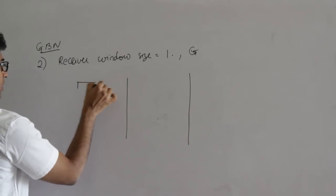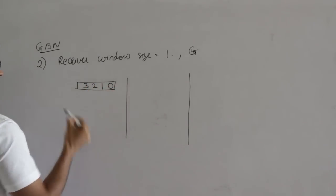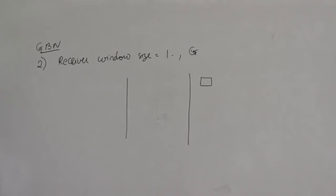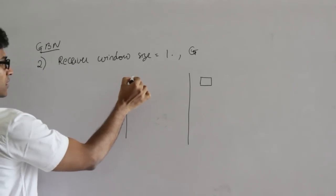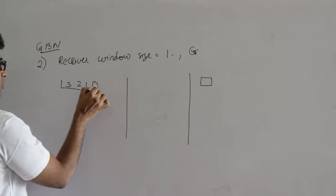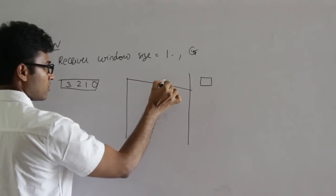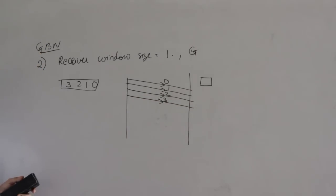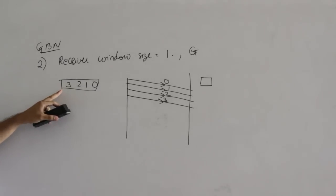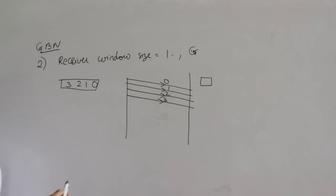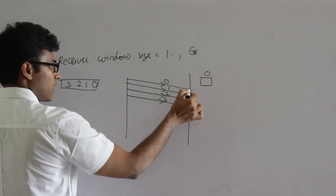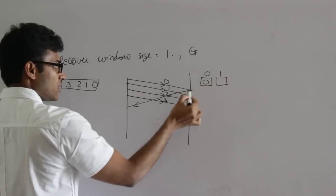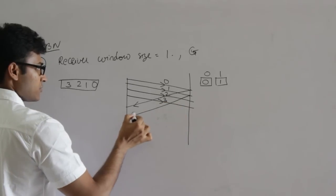Sender window size is 4, so I will be sending 4 packets: 0, 1, 2, 3. The receiver window size is 1, which means receiver will always be waiting for only one packet. I will be sending packets one by one from my window. Packet 0 is sent, received, and acknowledged. Then receiver waits for packet 1, receives it, and sends acknowledgement. Then it waits for packet 2.